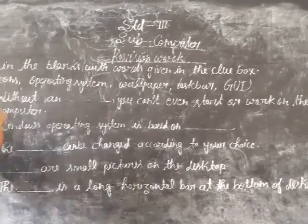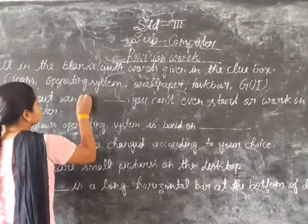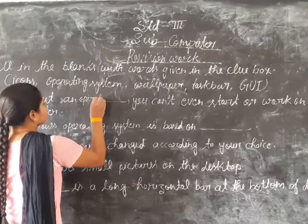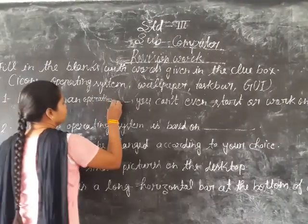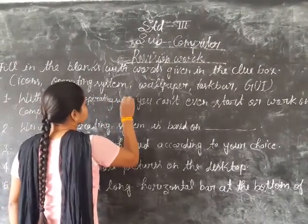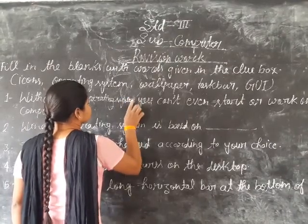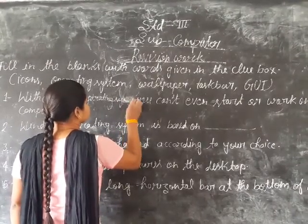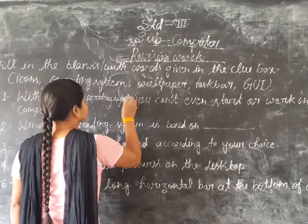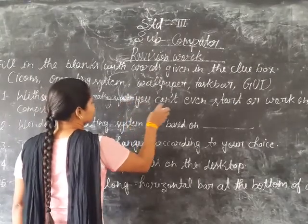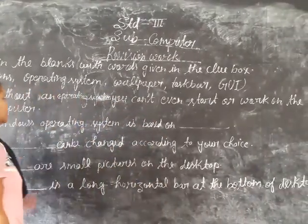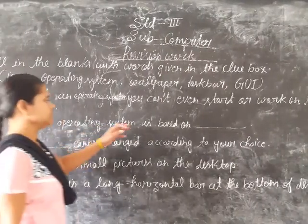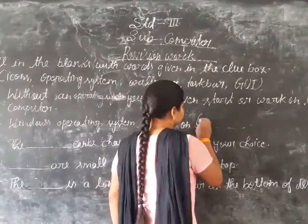So first, without an operating system, you can't even start work on the computer. And second, windows operating system is based on GUI.